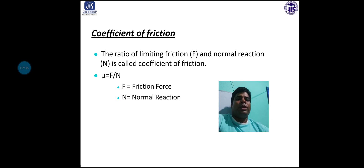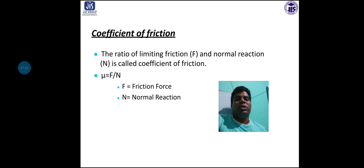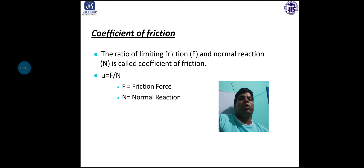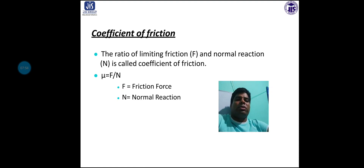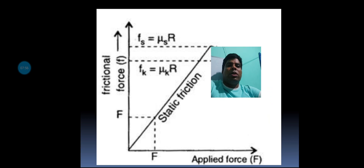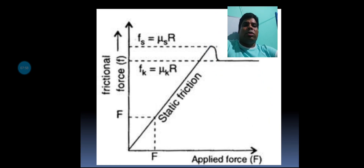Coefficient of friction: the ratio of the limiting friction force F and the normal reaction N is called the coefficient of friction, denoted by mu. So mu equals F divided by N, where F is the friction force and N is the normal reaction.